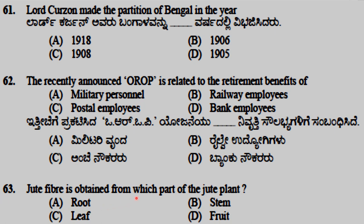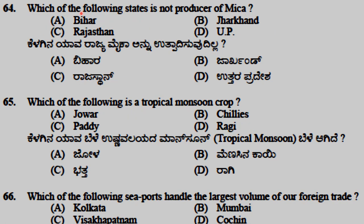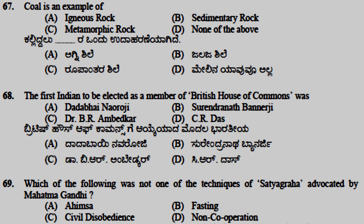Jute fiber is obtained from the stem of the jute plant. UP is not a producer of mica. Paddy is a tropical monsoon crop. Mumbai seaport handles the largest volume of foreign trade. Coal is an example of sedimentary rock.